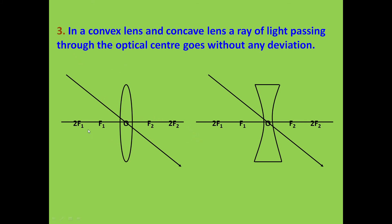F1 and F2 represent the two foci of the lens, because light can come from either the left side or the right side. OF is the focal length, O2F2 is double the focal length, and similarly O2F1 is also double the focal length. The same explanation applies in the case of a concave lens.